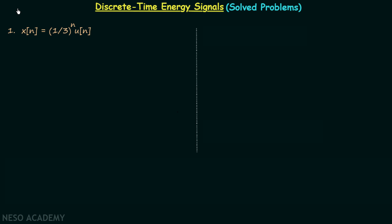In the last lecture we saw how to calculate the total energy of a discrete time signal and the condition for a discrete time signal to be an energy signal. In this lecture we will solve a few problems. In the first problem the discrete time signal Xn is equal to (1/3)^n multiplied by U[n] and we are required to calculate the total energy of this discrete time signal.